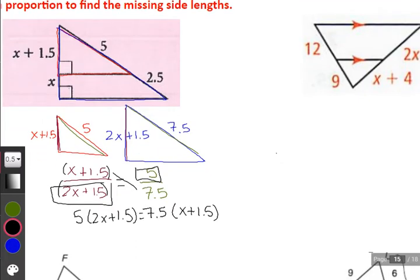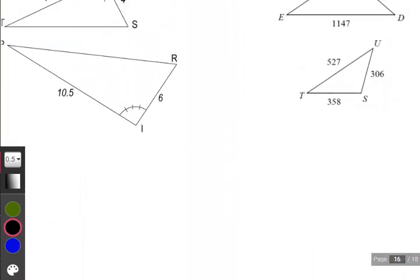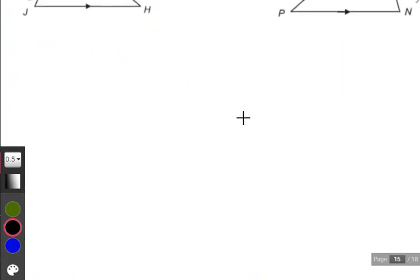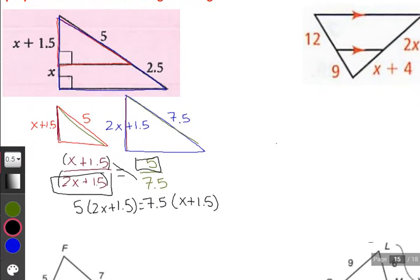Moving this up to get more room here. I didn't really fix what was going on on my board. I probably need to restart my computer or update. But we're going to get through these last four problems, hopefully. Let's do some distribution. So 5 times 2x is 10x, and 5 times 1.5 is 7.5. Here we have 7.5x, and then 7.5 times 1.5 will give us 11.25 for that distribution.